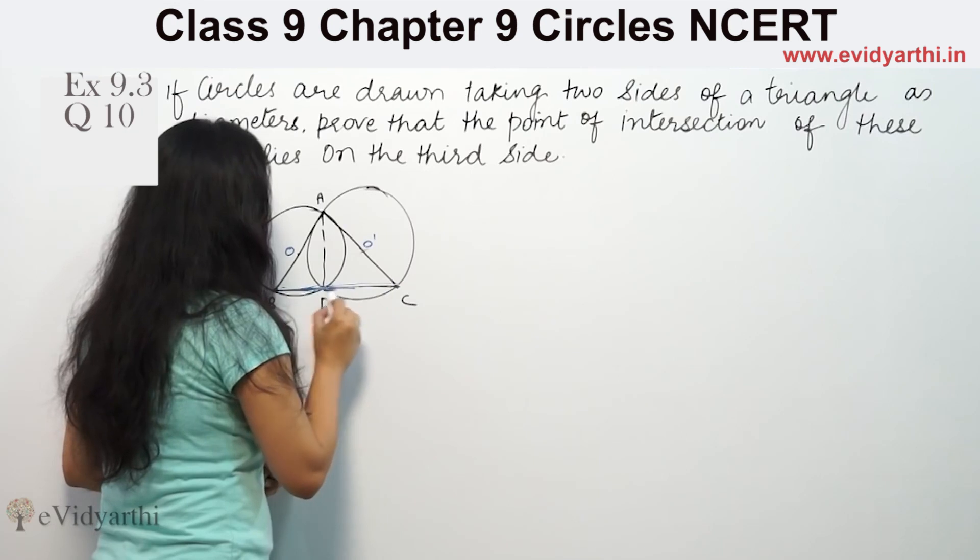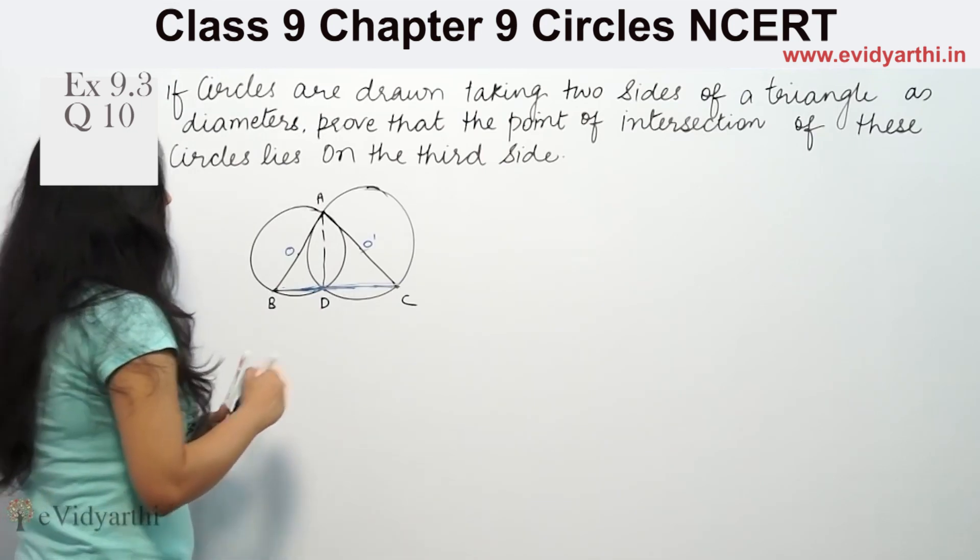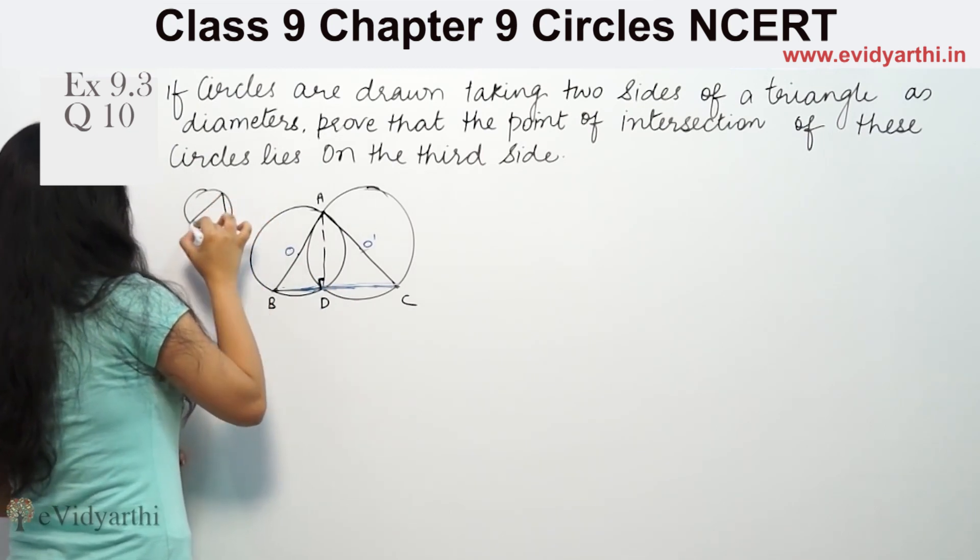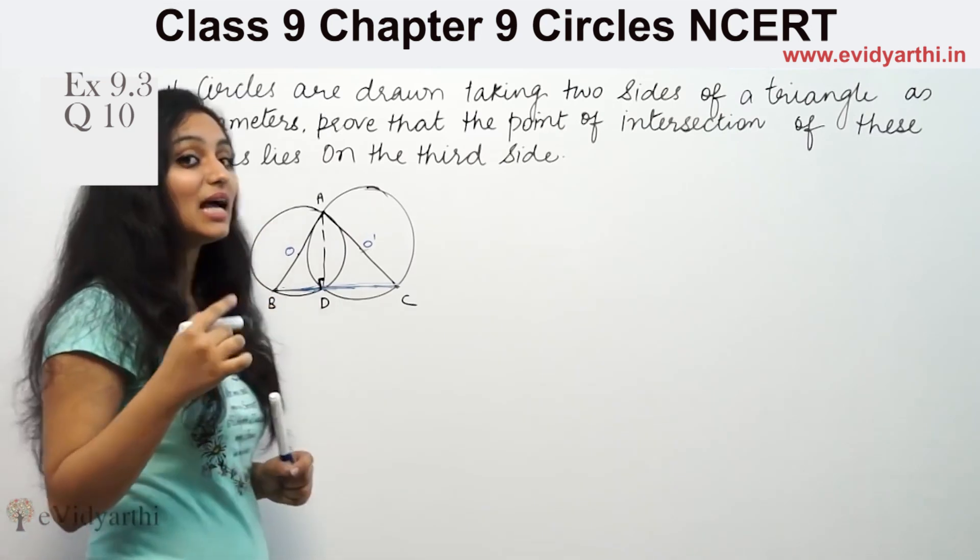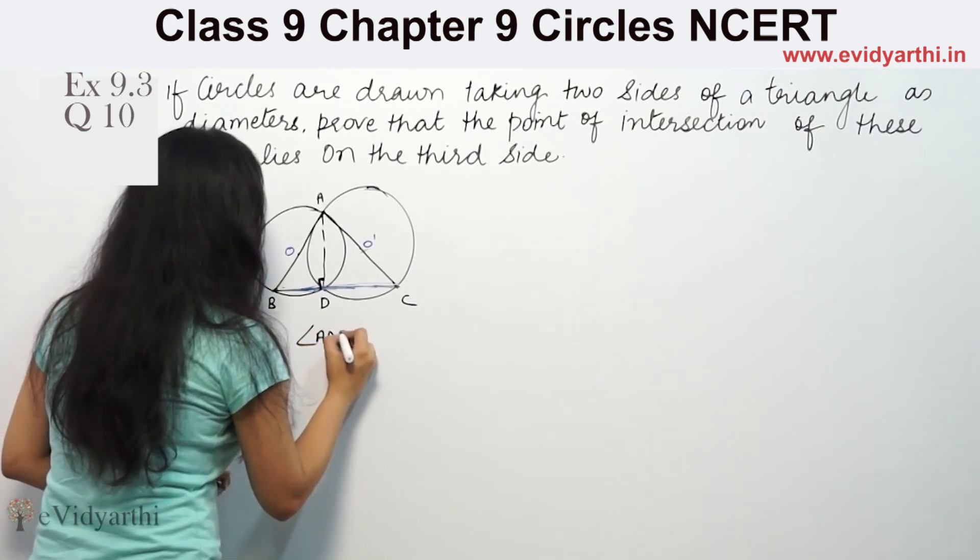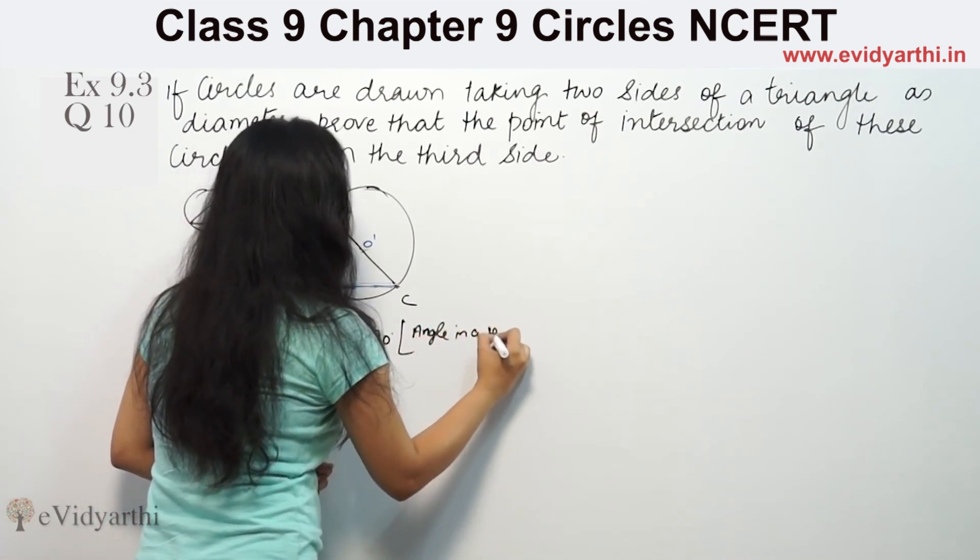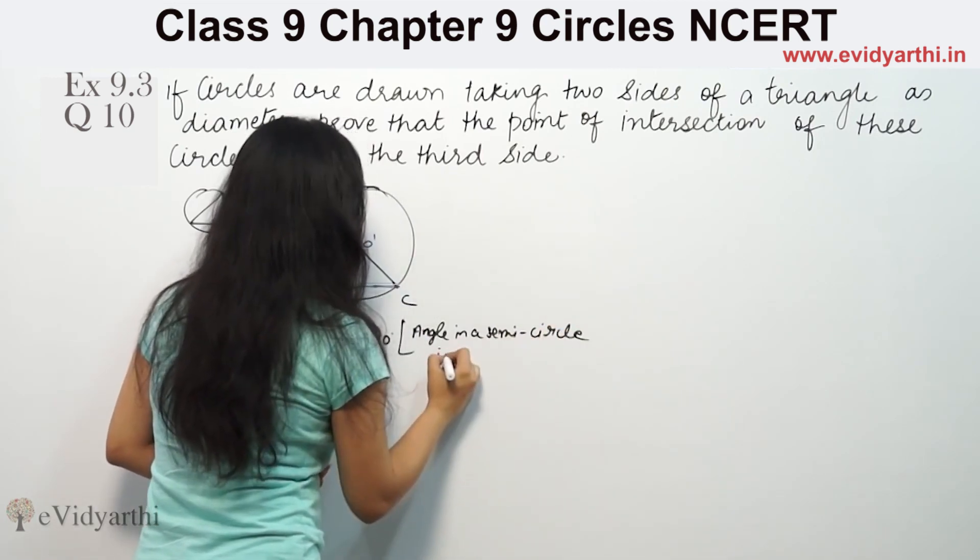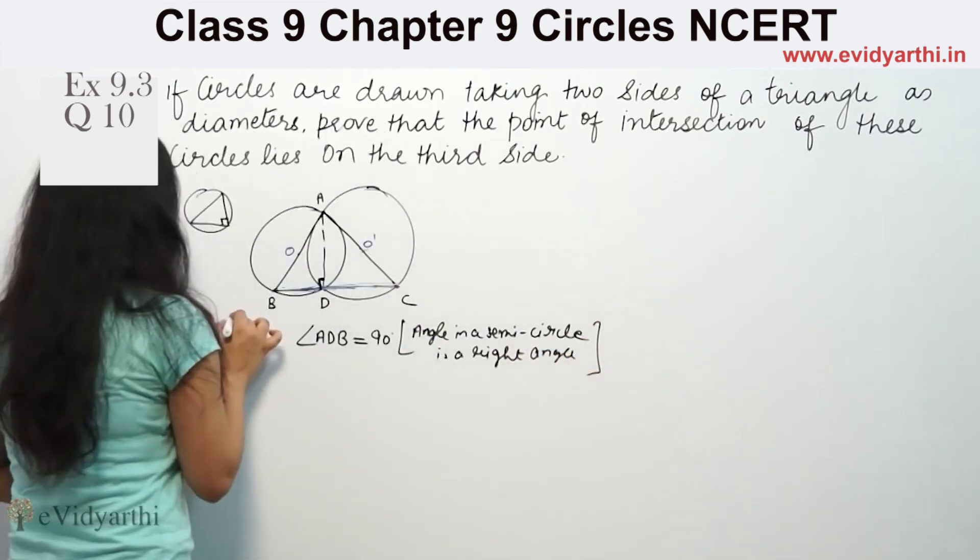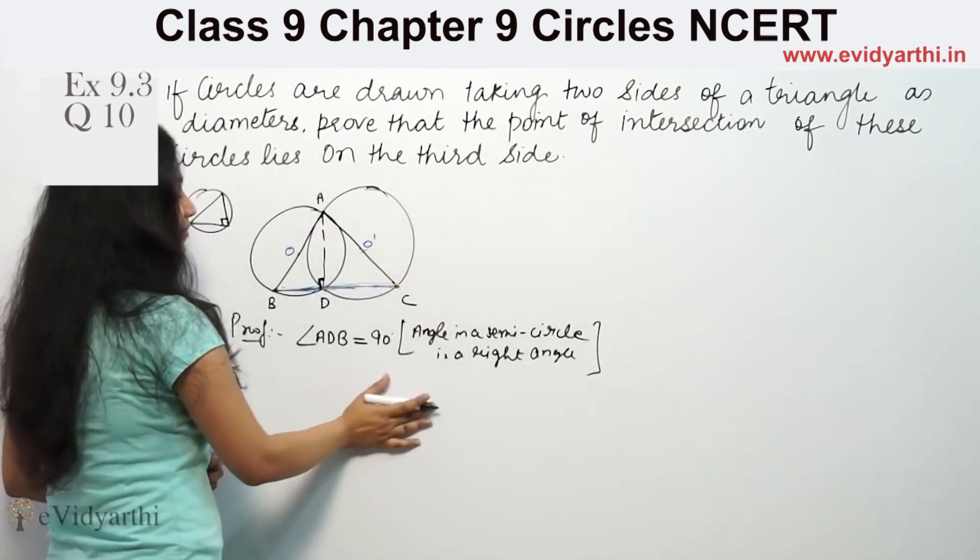We need to prove that these three points lie on a straight line. How do we do that? We know that angle ADB is 90 degrees because this angle is in a semicircle, and angle in a semicircle is 90. Angle ADB equals 90 degrees. Angle in a semicircle is a right angle.